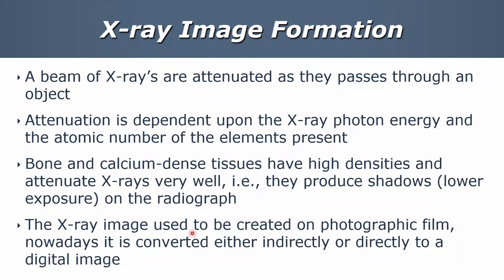X-ray formation: we're looking at a beam of x-rays being attenuated as they pass through the body. This attenuation is dependent upon the x-ray photon energy and the atomic number of the tissues or elements present. Bones and calcium have quite a high density and therefore attenuate these x-rays very well, and hence we end up with these shadows on our films.